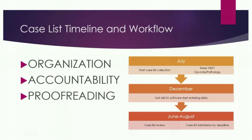In December, get the ABOG software — ABOG requires you to use their software to start entering data. Then June through August, where we are now, is getting your case list reviewed and submitted by the deadline. Accountability means sticking to the schedule. Proofreading is key — making sure everything flows and looks very organized before you submit. Be prepared, be organized, be diligent throughout the year.